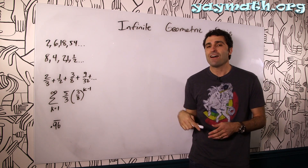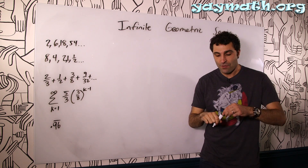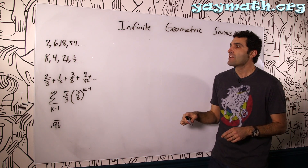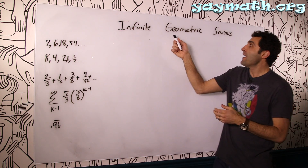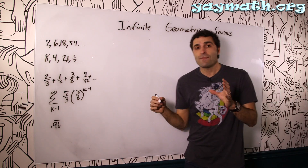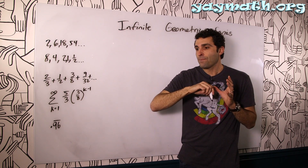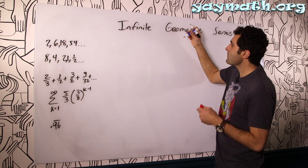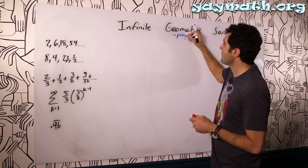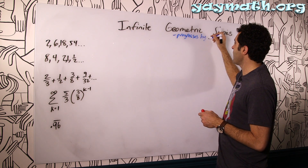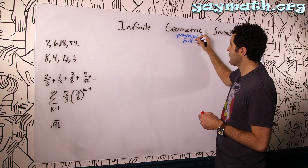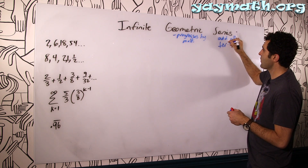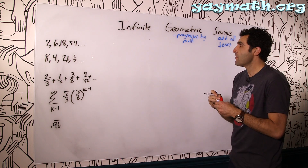I really like these — I think they're interesting and I'm going to explain to you why. So first let's define it. A geometric series is basically a geometric sequence, which is a sequence that progresses by multiplication. We're going to add up all the terms.